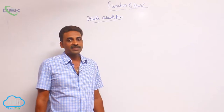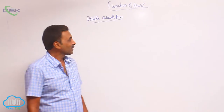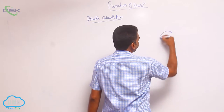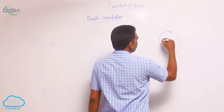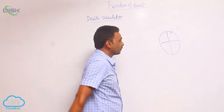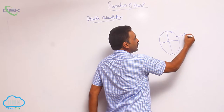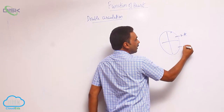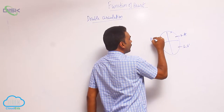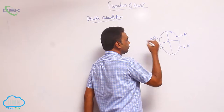Double circulation occurs in the human heart. The heart has four chambers: the left atrium, the left ventricle, the right atrium, and the right ventricle.